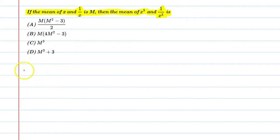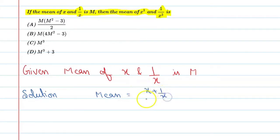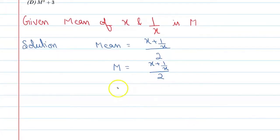First of all we will write the given. The given is mean of x and 1 by x is M. So from here we can say mean equals sum of the observations, that is x plus 1 by x, and these are two observations, so you can say divided by 2. Alright, so from this you can say 2 times the mean value is M, so let me write it here: M equals x plus 1 upon x upon 2. Okay, now you can say 2M is equal to x plus 1 by x, and mark this equation number 1.